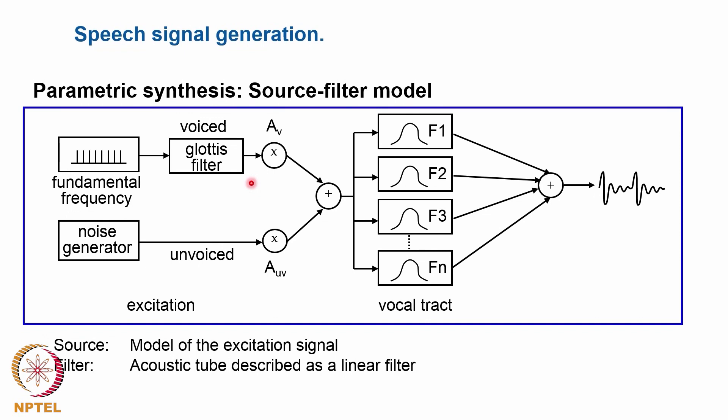Perhaps including a glottis filter, or if it's a noisy sound, then the noise signal to be generated. We can amplify those excitation signals and add them in case we have a mixed excitation, and then transmit everything through the vocal tract filter, which here is modeled as a parallel structure of different formant filters. As you know, these formants are important for the characteristics of the sound to be produced.